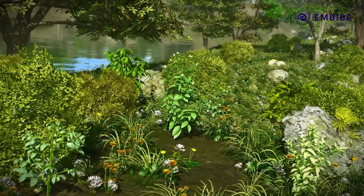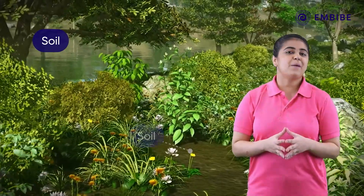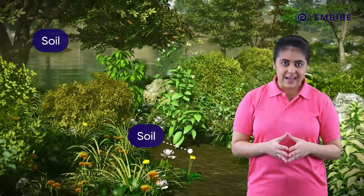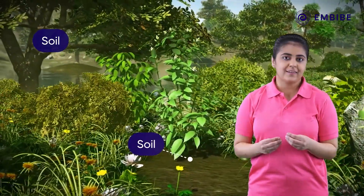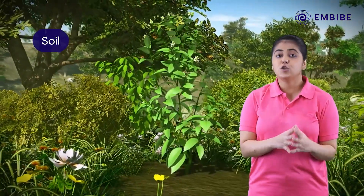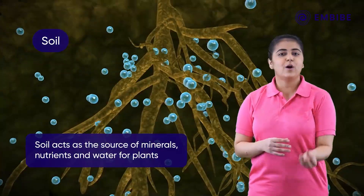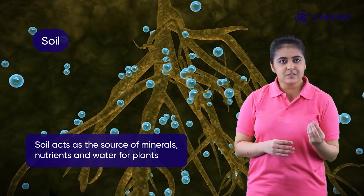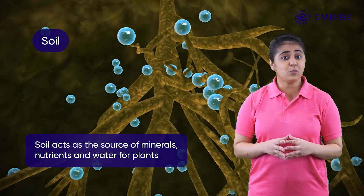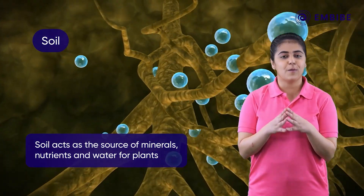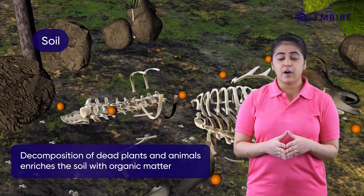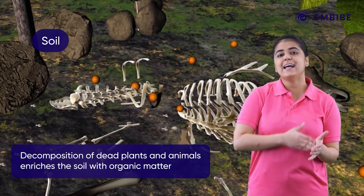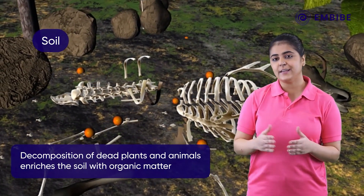The last abiotic factor is soil. The upper layer of the land surface constitutes the soil, and land plants remain attached to it. They obtain minerals, nutrients, and water from the soil. Decomposition of plants and animals adds to the organic content of the soil.